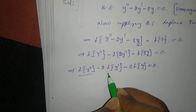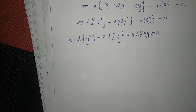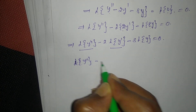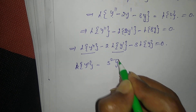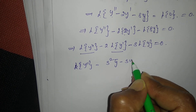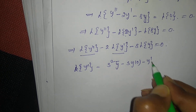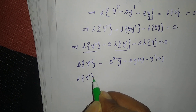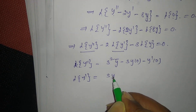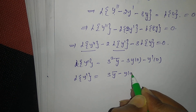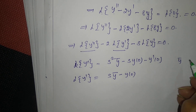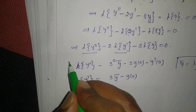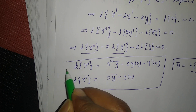We use the formulas: L{y''} = S²·ȳ - S·y(0) - y'(0), and L{y'} = S·ȳ - y(0), where ȳ denotes L{y}.